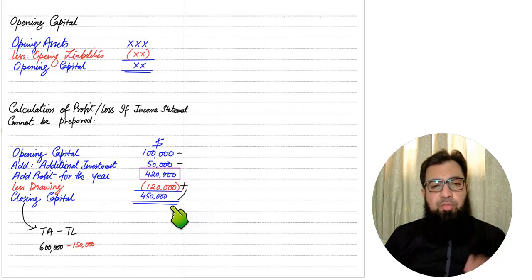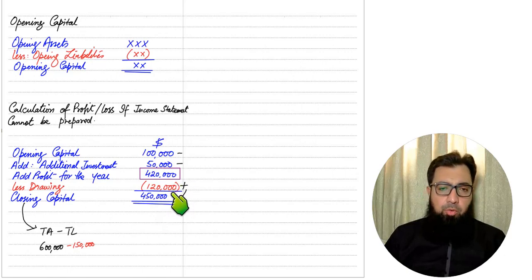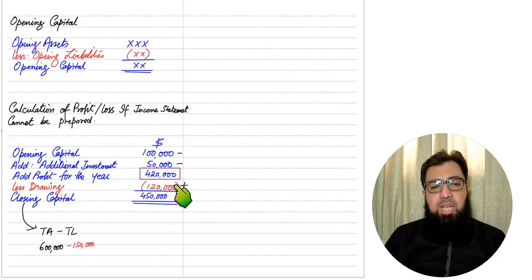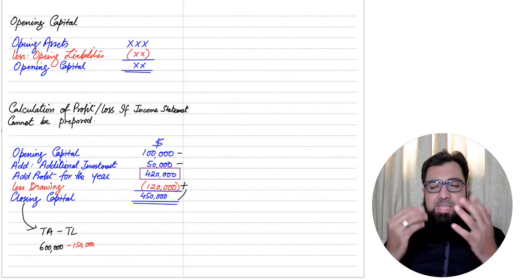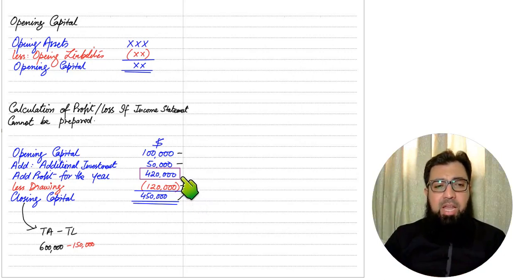There is a logic behind this. Suppose your business has 450,000 capital at the end of the year and you have drawn 120,000 out. If you had not made those drawings, your capital would be higher — it would be 570,000. At the start of the year, capital including investment was 150,000. Capital has increased from 150,000 to 570,000. Why has capital gone up? It is basically the profit for the year. On the other hand, if this figure is negative, it means there is a loss for the year.